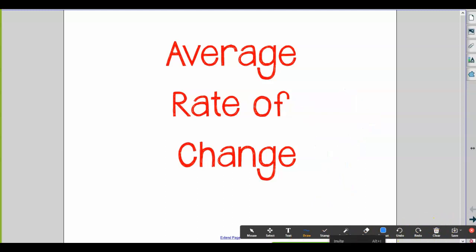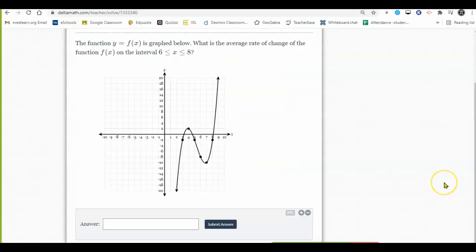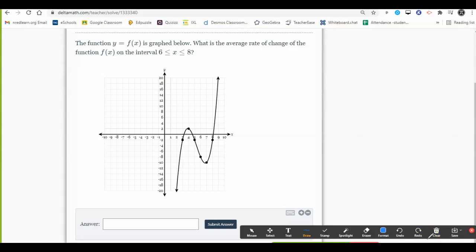Let's take a look at our first example. Calculate the average rate of change from a graph. Here's a polynomial function graphed called f of x, and you are tasked with finding the average rate of change of the function over this very specific interval, from 6 to 8.